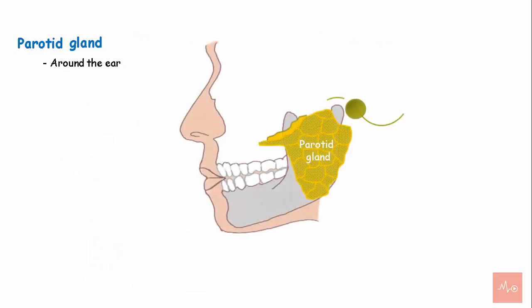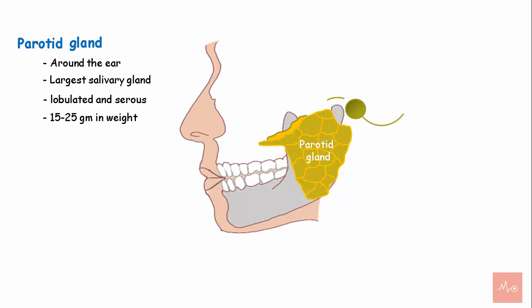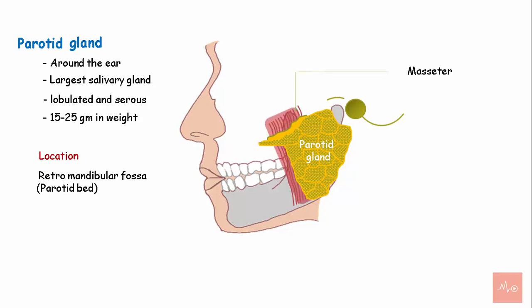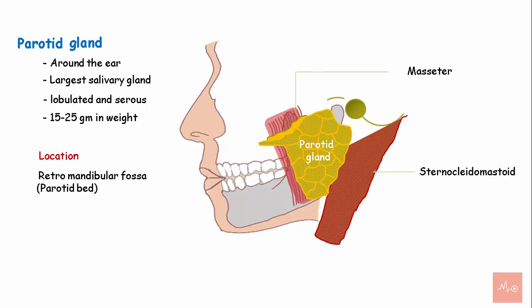The word parotid refers to 'around the ear.' The parotid gland is the largest salivary gland. It is lobulated and serous and weighs around 15–25 grams. The parotid gland is located in the retromandibular fossa behind the ramus of the mandible. It lies over the masseter muscle anteriorly and the sternocleidomastoid muscle posteriorly.